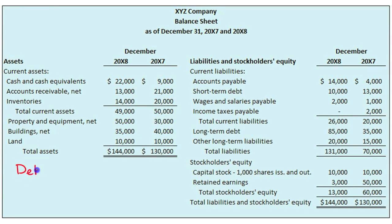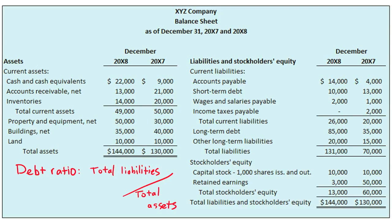Here are a couple of other computations that are interesting to users. The debt ratio is computed as total liabilities divided by total assets. Users compute a company's debt ratio to assess what percentage of the company's assets were funded by debt. A debt ratio of 1 indicates that for every $1 of assets, the company has $1 of liabilities — in other words, 100% of the company's assets were funded by debt, and the company is very highly leveraged.